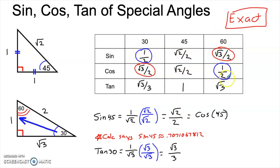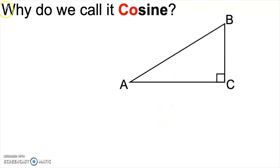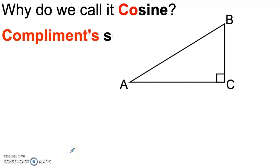30 and 60 have the property that they add up to 90 degrees. To understand how to solve this, we first want to think about why it's called cosine in the first place. There's sine and there's cosine — what does that 'co' in cosine stand for? It stands for the complement's sine. Cosine is a contraction.